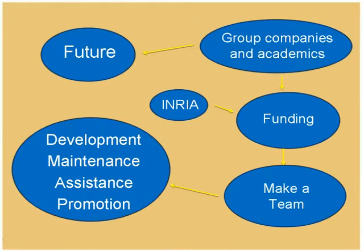The only way to ensure the future was to group people around Scilab — to group academics and companies. To make all the other kinds of work, we need to make a team. And at this point in the story, I need to speak about a very bad thing — and this bad thing, I'm sorry, is money. We need to have money, we need to have funding, because we need a team dedicated completely to the development of Scilab.